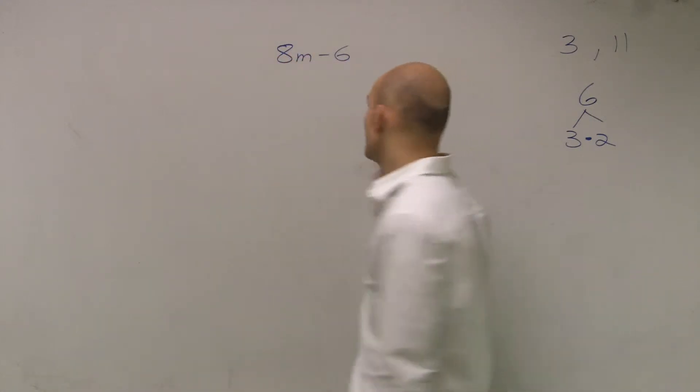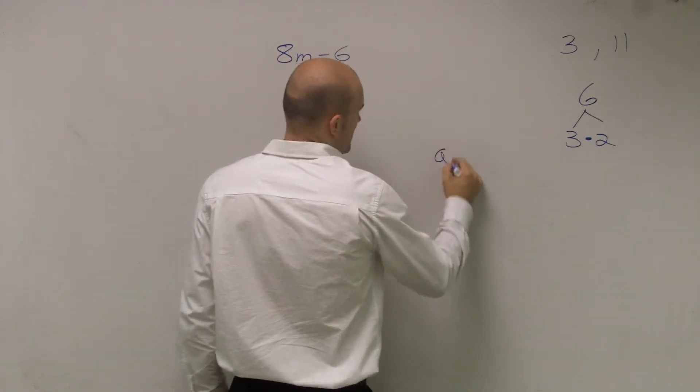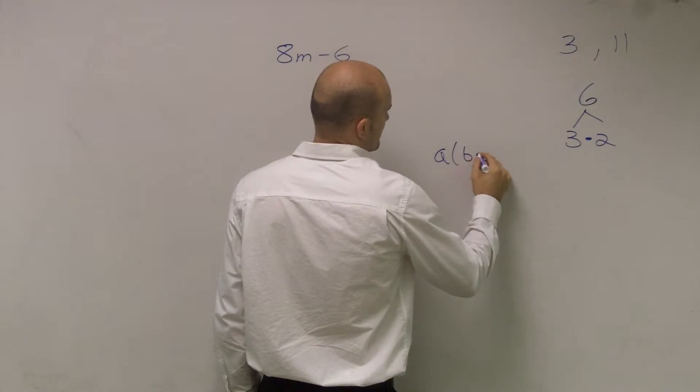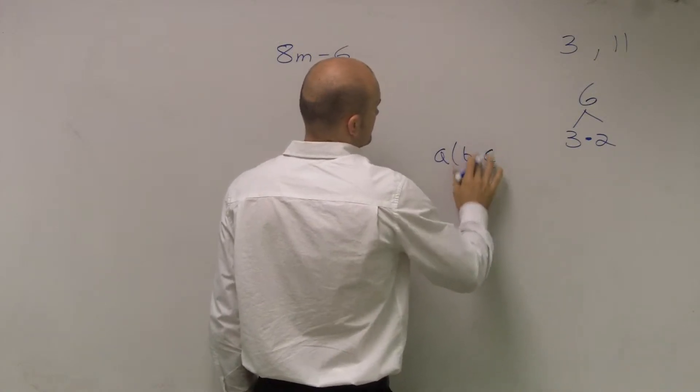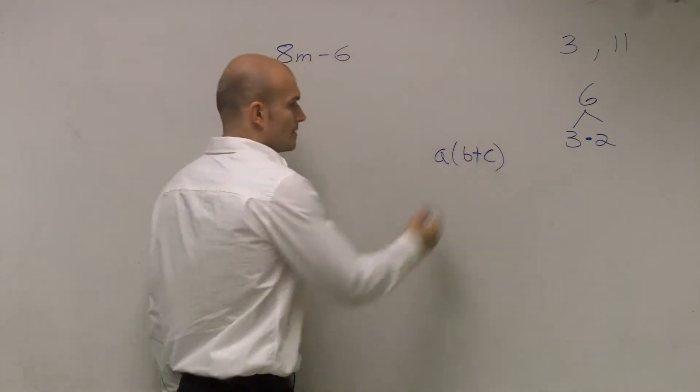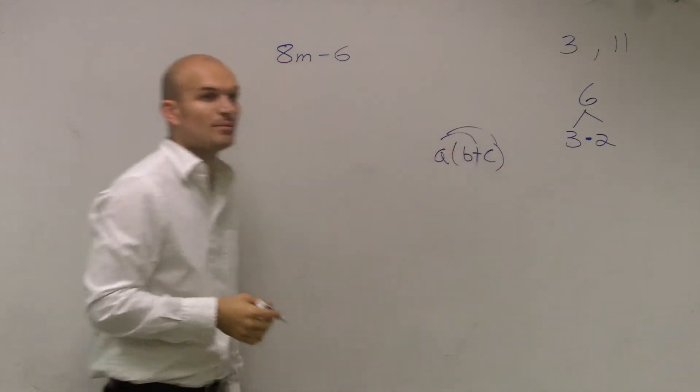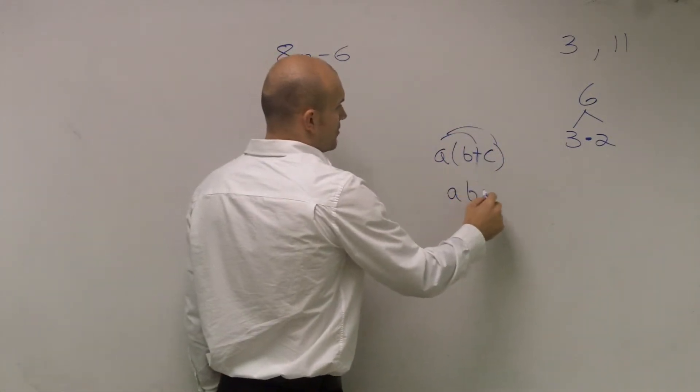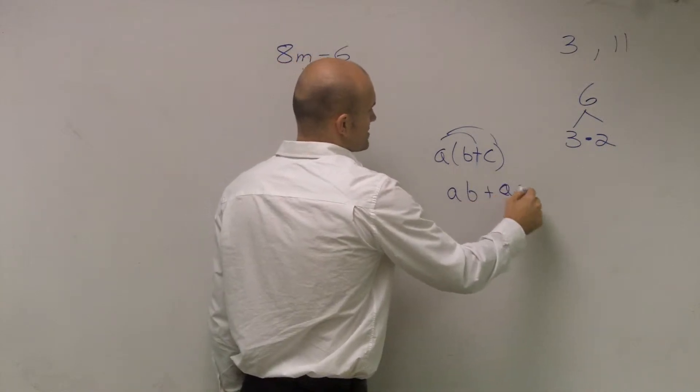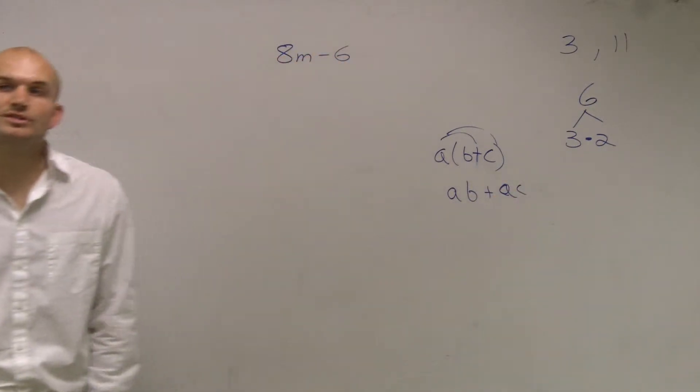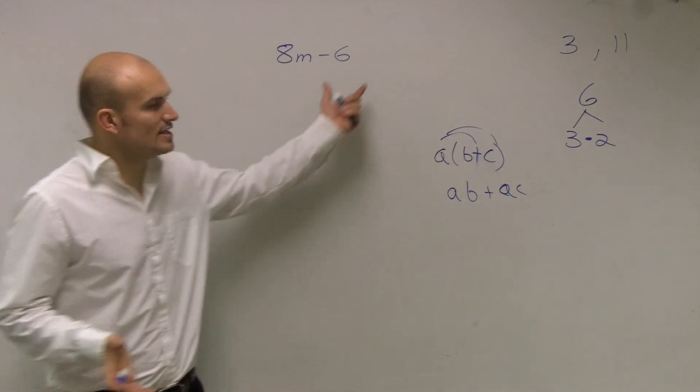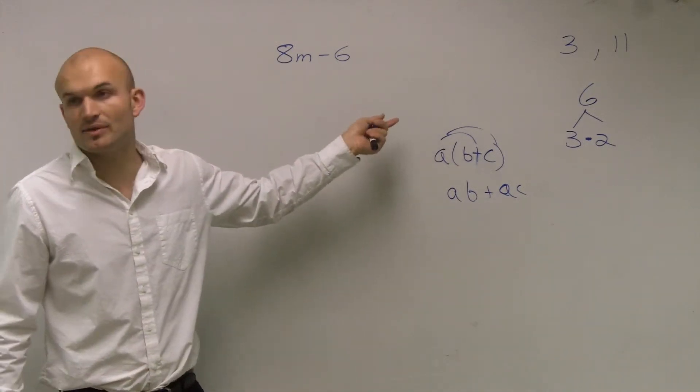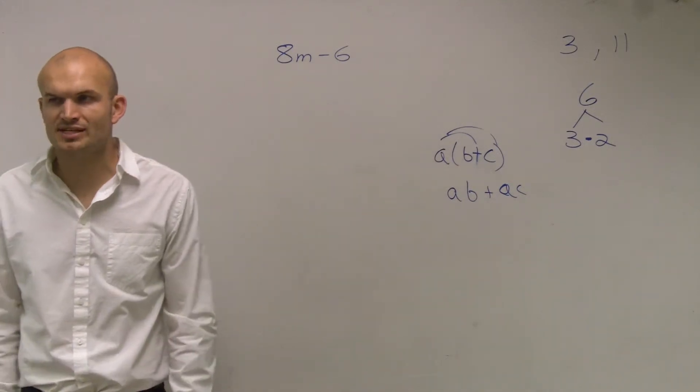Distributive property states whenever we have a number outside of parentheses, we multiply that number times both of the numbers inside parentheses. So what we're going to do is we're going to try to see if we can factor out a number that both 8m and negative 6 share.